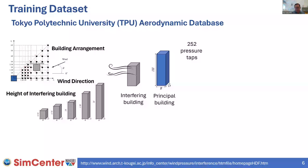Question: How long does it take to train a surrogate model of this size? With 500 data sets and the design of experiments, I think it took about two hours, though I cannot recall exactly.